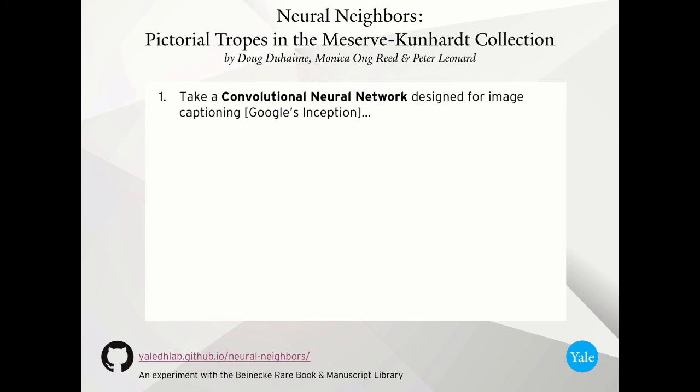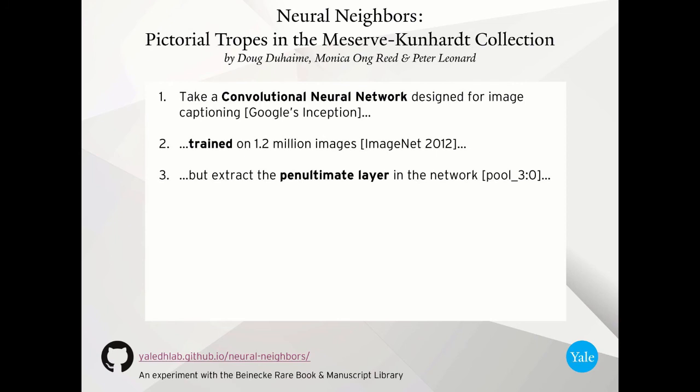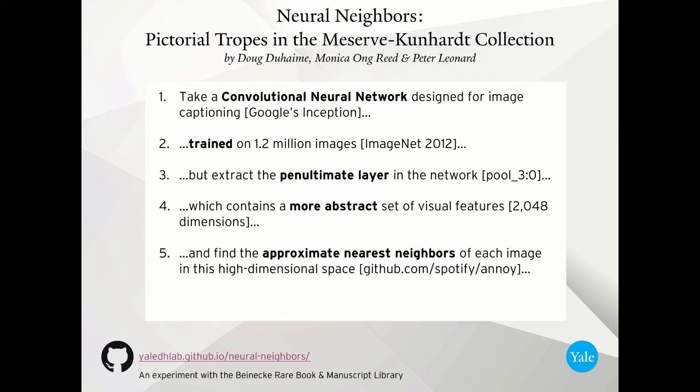So we take this intuition from the team that presented in Krakow, and what we've done is we've built a demonstration application called Neural Neighbors, Pictorial Tropes in the Meserve-Kunhardt Collection. We take a convolutional neural network, which is designed for image captioning. In this case we use Inception, which is provided by Google. We take that semi-final layer, that second to last layer in the network, which has a more abstract set of visual features than cat versus dog. In fact, it has about 2,048 ways of seeing that are impossible to describe. And in this high dimensional space, we find the approximate nearest neighbors of each image in this space.